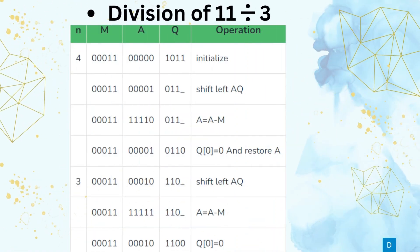Let us see an example in which we divide 11 by 3. Here, 11 is the dividend represented by Q and 3 is the divisor represented by M. We represent 11 in unsigned binary form as 1011. The number of bits required to represent Q is 4. Hence, we represent M and the accumulator A in N+1, that is 5 bits. So 3 is represented using 5 bits in M, and A is initialized to 0 using 5 bits. The counter N starts at 4.